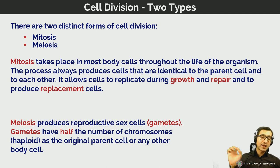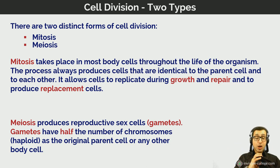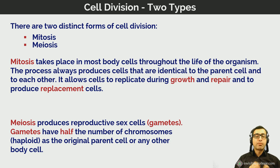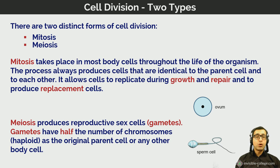The reason gametes are haploid is that when a sperm cell from the male parent and an egg cell from the female parent fuse during fertilization, the resulting zygote — the first diploid cell — will have the correct full number of chromosomes. Meiosis ensures gametes are produced with half the full chromosome number, so that when they fuse during fertilization you produce a zygote with the correct number. Both the ovum and the sperm cell are haploid.